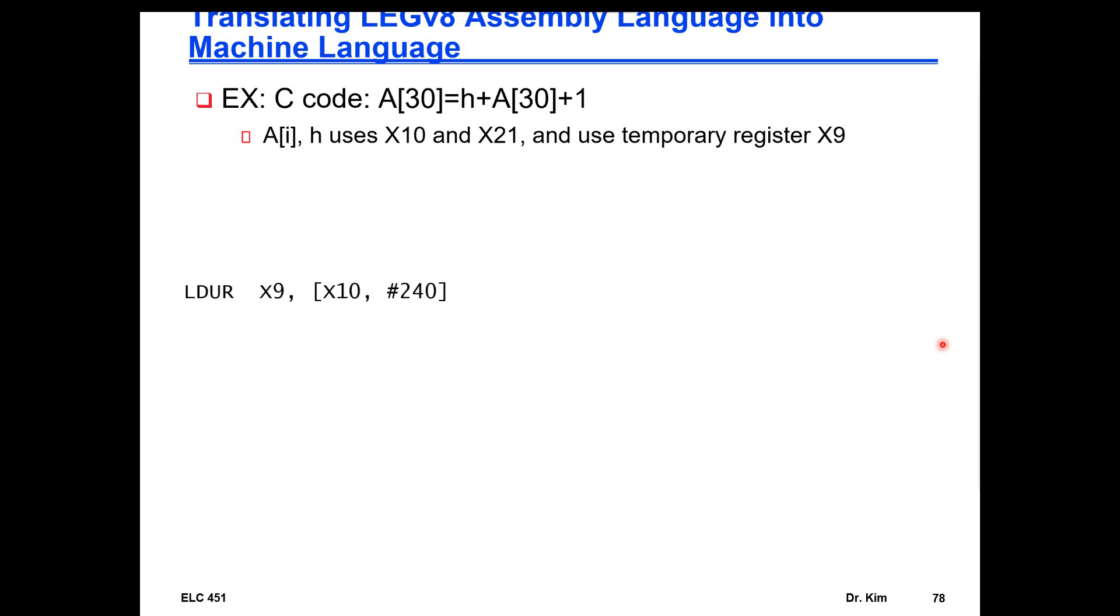So first, remember that all interaction with memory is through loads and stores. So we're going to load that member of the array into register 9. So from your familiarity with the load instruction and that specific relative addressing mode, you know that X10 is going to contain the pointer of A. So basically the address of the first member.